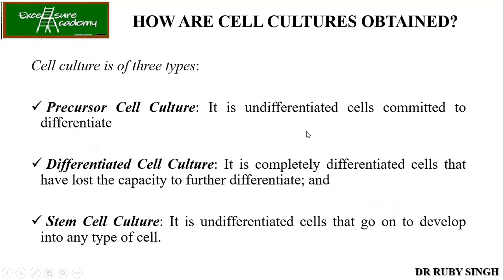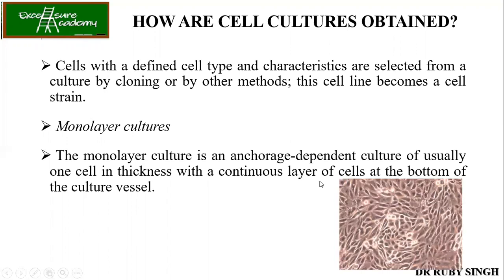There are three types of cultured cells: precursor, differentiated, and stem cells. Precursor cells are undifferentiated cells committed to differentiate — depending on the growth factors you add to the media, you can make cells differentiate into skin, liver, kidney, or neuronal cells. Differentiated cell culture is completely differentiated — it cannot further differentiate and already has liver, kidney, or brain cell properties. Stem cells, as the name says, are undifferentiated cells that can become any type of cell depending on the growth factors provided.